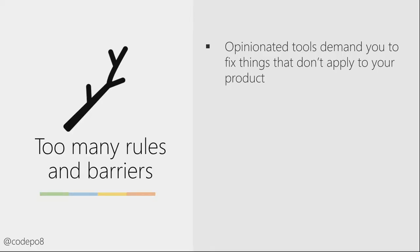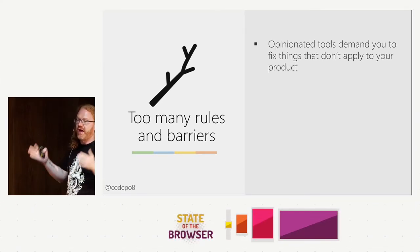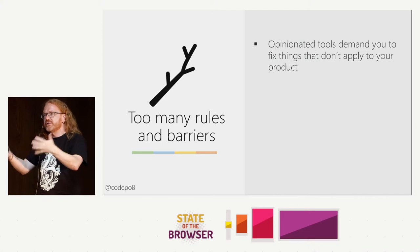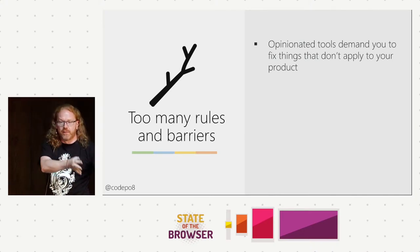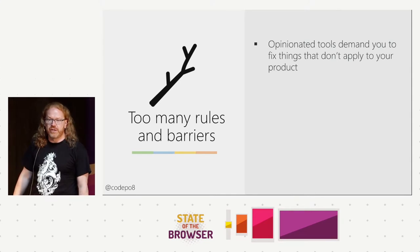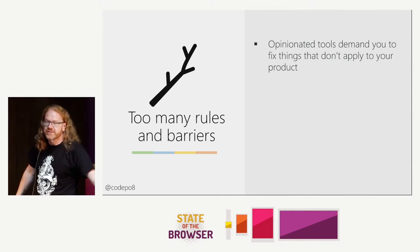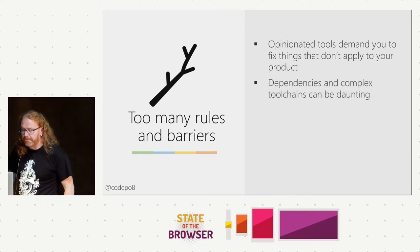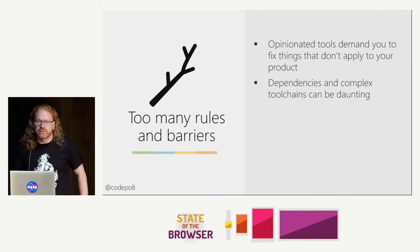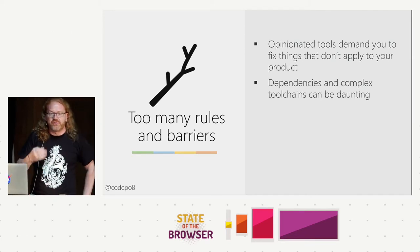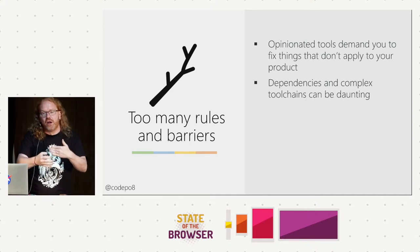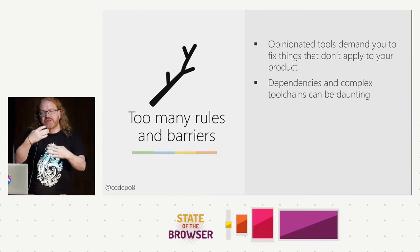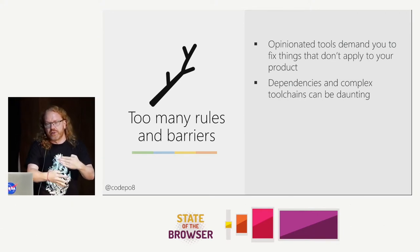There are too many rules and barriers. Opinionated tools demand you fix things that don't apply to your product — to get 100% in a testing tool you need a web worker, a service worker, and a manifest, otherwise you're not PWA compatible. But if I'm building an intranet page that doesn't need to be PWA compatible and never needs a service worker, the tool tells me unless I do that, it doesn't get live. Dependencies in complex tool chains can be daunting — by the time somebody says 'that's the coolest thing ever,' I'm on a plane, and four days later their next blog post says 'don't use that, it's not good enough anymore.'